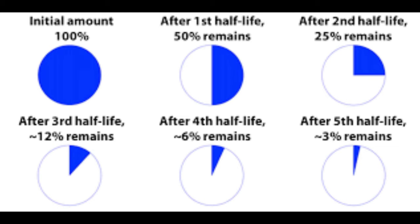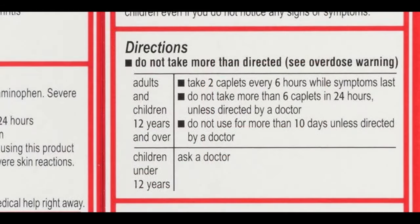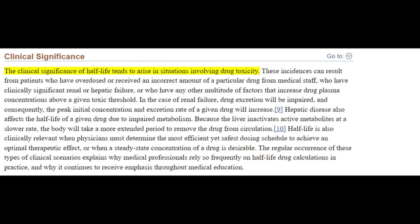Half-life calculation is crucial because it helps determine how frequently a drug should be administered to maintain its therapeutic effect. For example, a painkiller like Tylenol Extra Strength for Adults has a half-life of six hours, so a patient may need to take it every six hours to ensure continuous pain relief. Overestimating or underestimating a drug's half-life could lead to ineffective treatment or, in some cases, side effects.